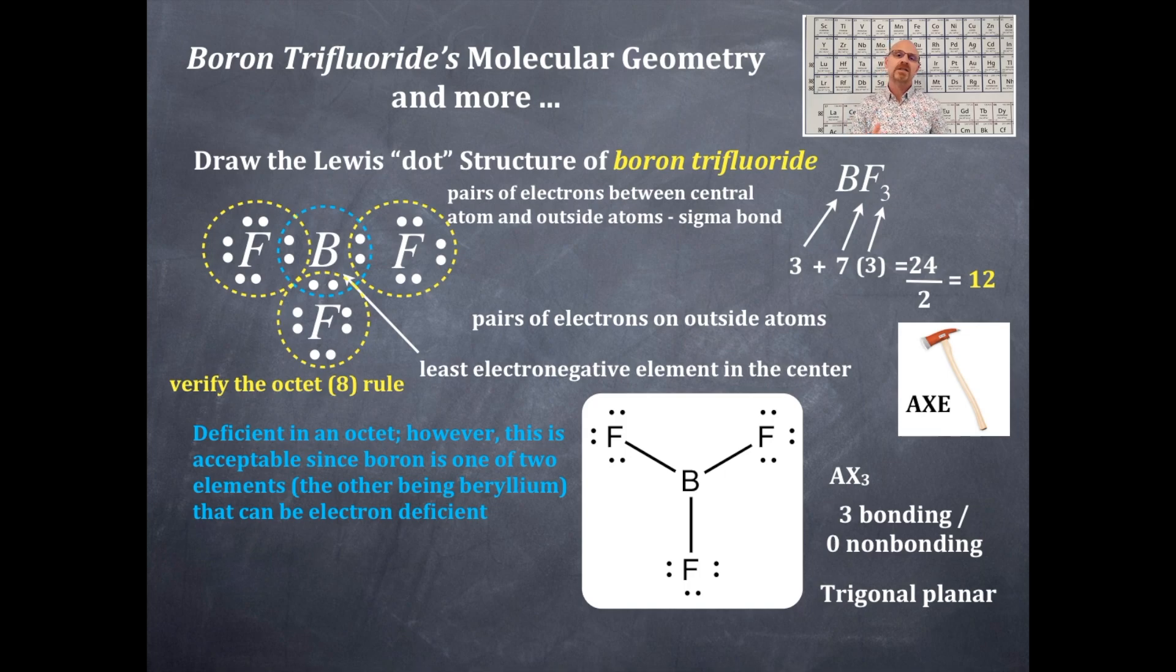Now trigonal planar has a certain bond angle and that bond angle is 120 degrees. So if you see that Lewis dot structure, that's like a circle. All those atoms, the boron and the three fluorines, are in the same plane because it's trigonal planar. And being such, a circle has 360 degrees. You divide that by three because you have three fluorines and now you got bond angles of 120 for each of those.